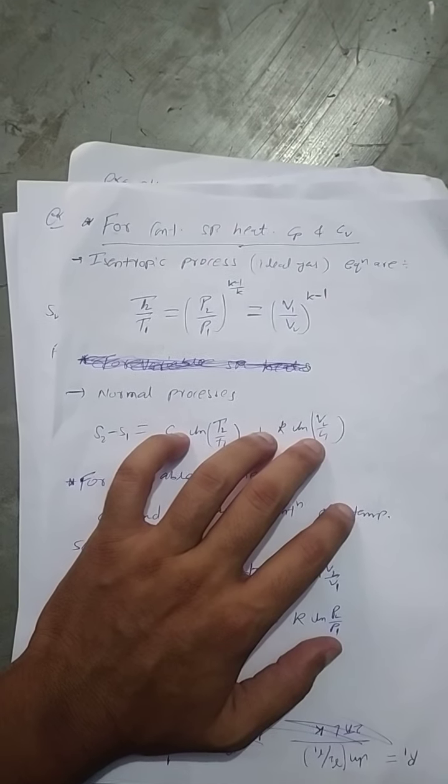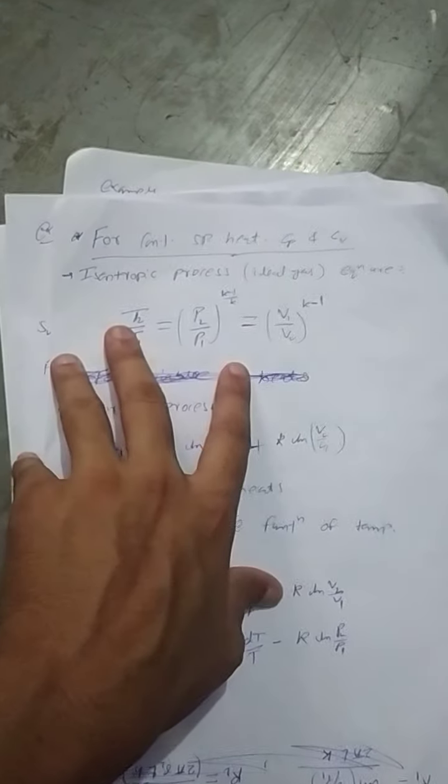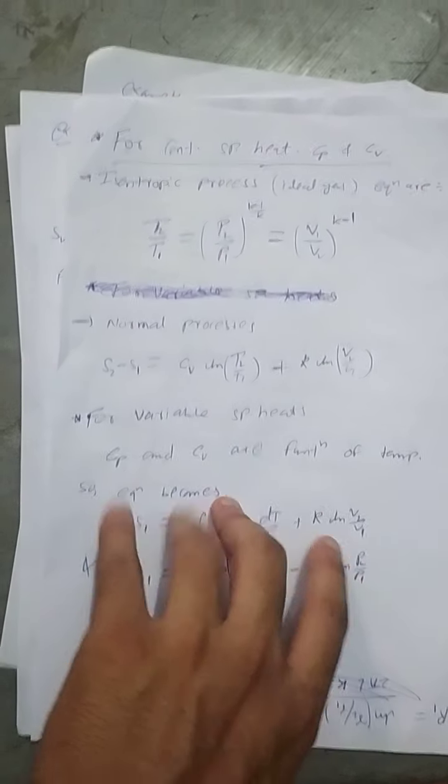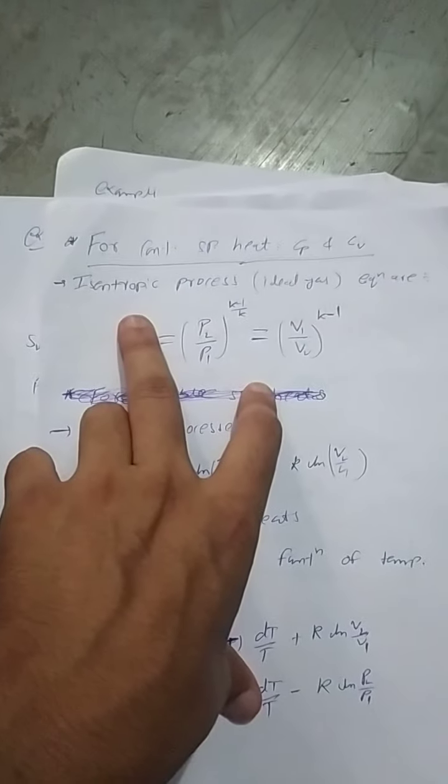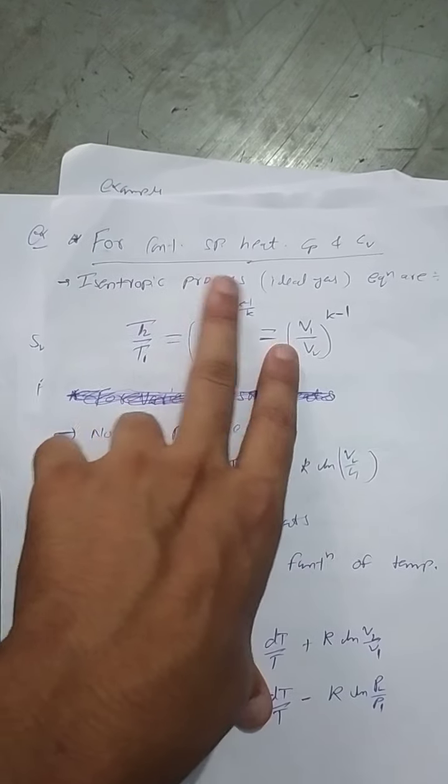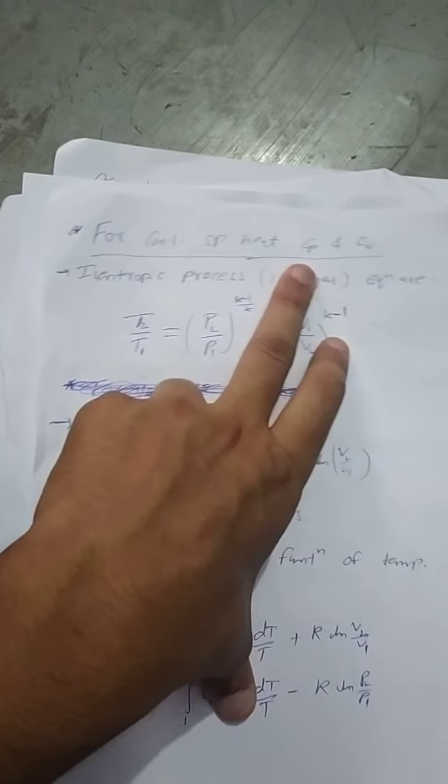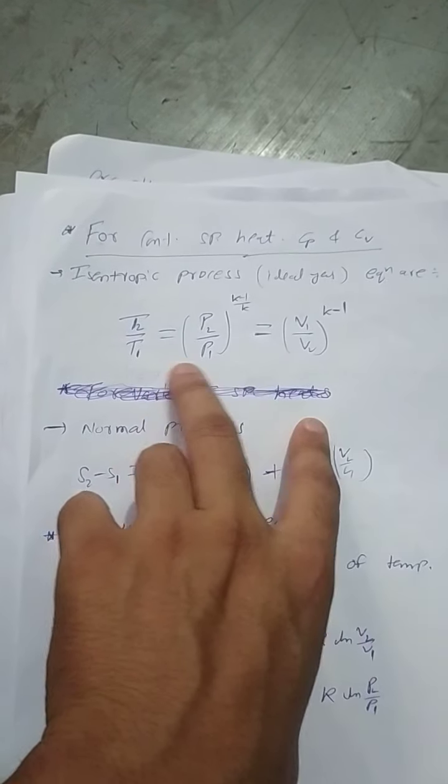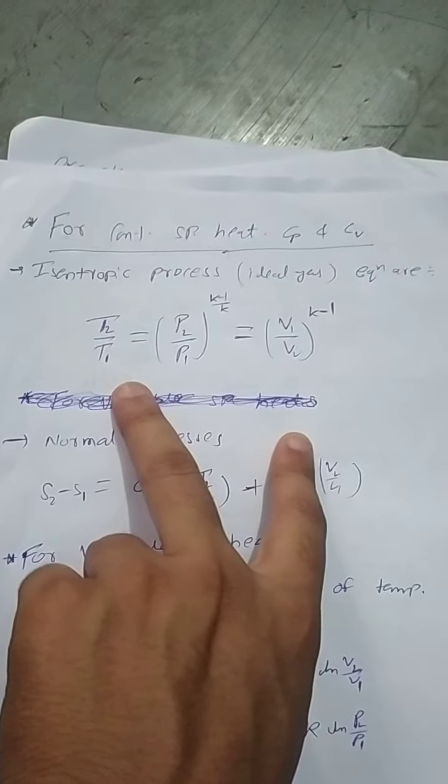Today we are going to talk about variable specific heats. First, let's see if specific heats are constant and given. For isentropic process, these are the common formulas which I think everyone knows.